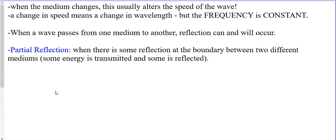What happens when a wave goes from one medium into another? When the material is not consistent, you get partial reflection — some of the wave propagates through into the new medium and some reflects back. The key concept: frequency is not allowed to change. The speed can change and the wavelength can change, but the frequency, once a wave is created, cannot change — you'd have to change it at the source.